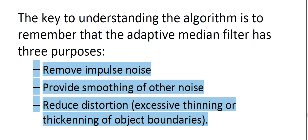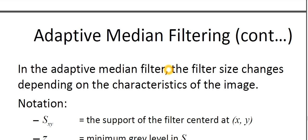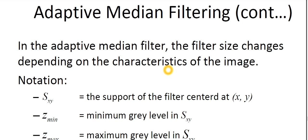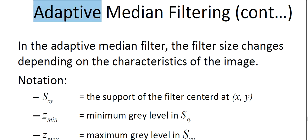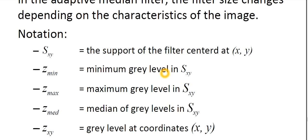In the adaptive median filter, the filter size changes depending on the characteristics of the image — that is why the term 'adaptive' is used. It can adopt new characteristics of the image and accordingly its size will be changed. Now, some notations you need to know.